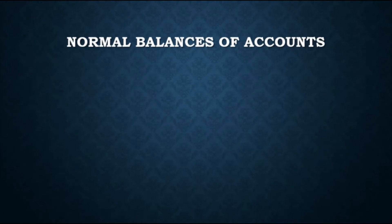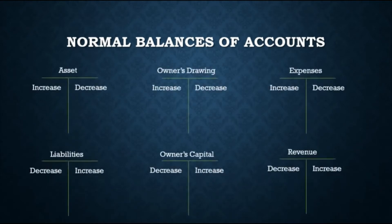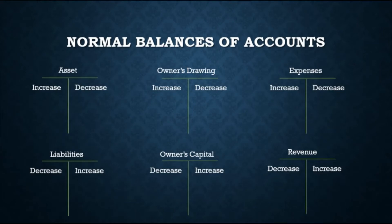Take note that the balance of an account must be in its normal balance. The normal balance is the side where an account increases. For example, asset accounts increase with a debit, so their normal balance is debit — same with drawings and expense accounts. Liabilities, capital, and revenue accounts have a normal credit balance because that is where they increase. It is important to know the normal balance because if an account balance is not in its normal balance, it may indicate an error in journalizing or posting. For example, a credit balance in office equipment may signal an error since the normal balance of an asset is debit.